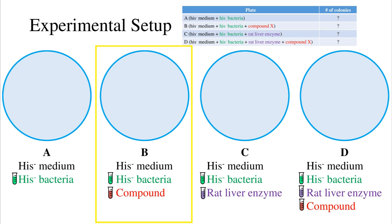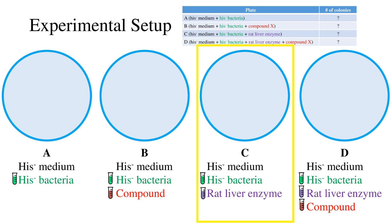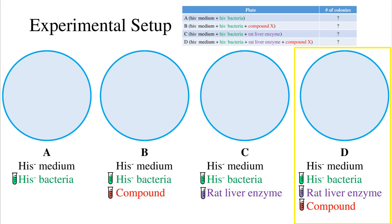Plate B shows the mutagenic properties of the parent compound. Plate C is another control plate with rat liver enzyme plus hist-minus bacteria in hist-minus medium. The purpose of rat liver enzyme is to simulate the human body, because bacteria don't have enzymes that can change the compound, but humans do. So rat liver homogenate is used to simulate the human liver. The rate of reverse mutation on Plate C should not be affected, since the liver enzymes alone do not increase the rate of reverse mutation. Plate D models the activity of the compound in our body once it is metabolized.